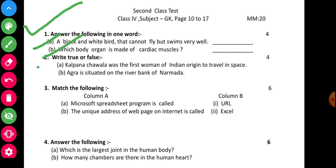Question number two: write true or false. Sub-part A — Kalpana Chawla was the first woman of Indian origin to travel in space. Sub-part B — Agra is situated on the riverbank of Narmada. If the statement is correct write true, if wrong write false.